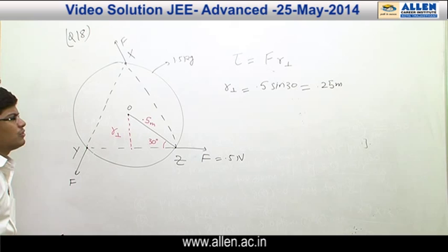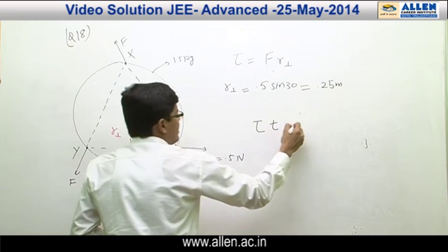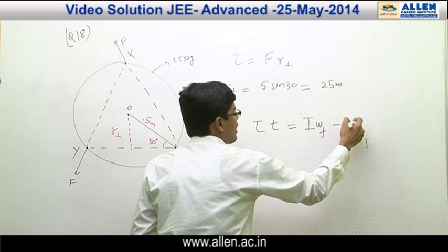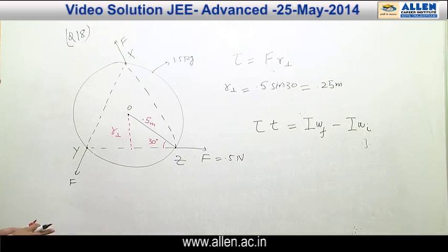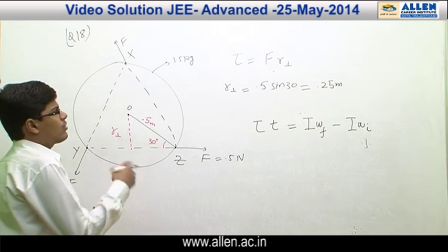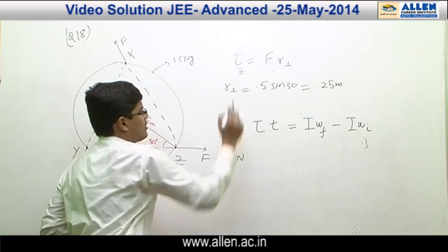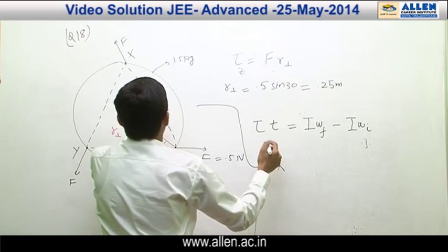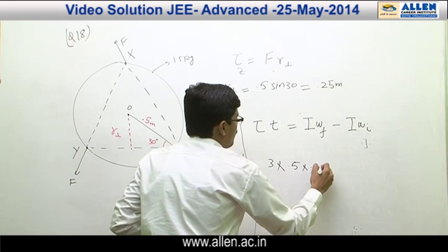Angular impulse on the body equals the change in angular momentum: torque × time = ΔL. Since all three forces produce the same torque about point O, the net torque is three times the torque due to force at Z: net torque = 3 × 0.5 × 0.25 Newton·meter.